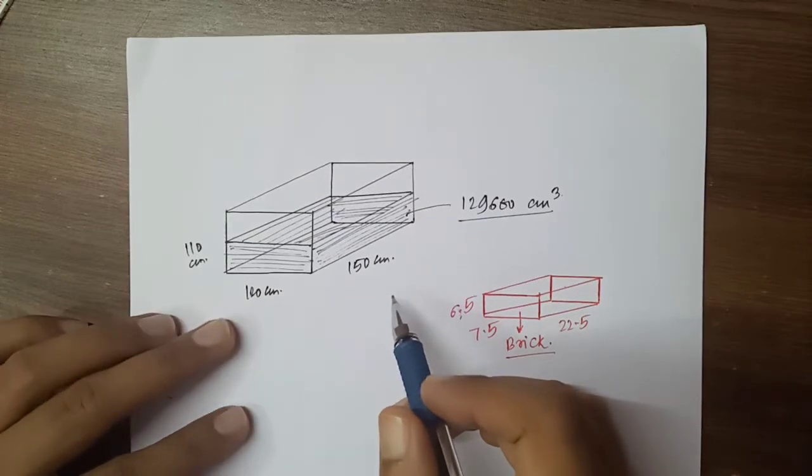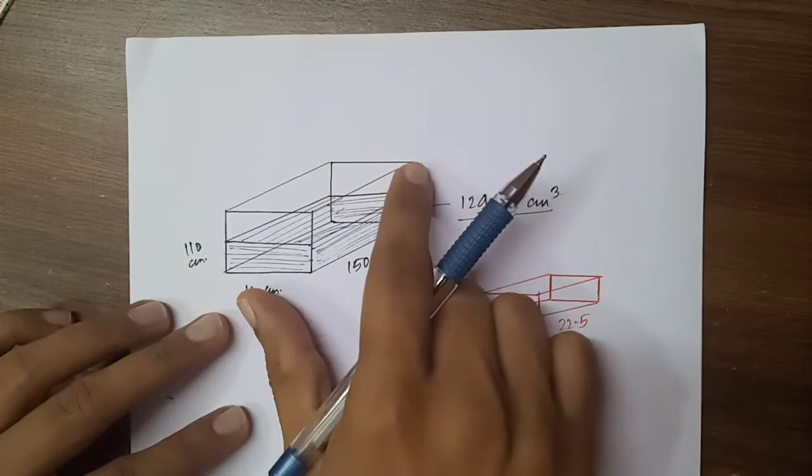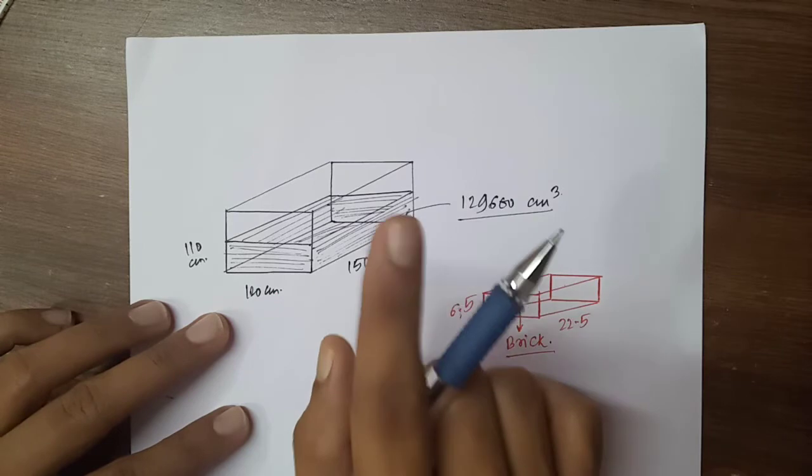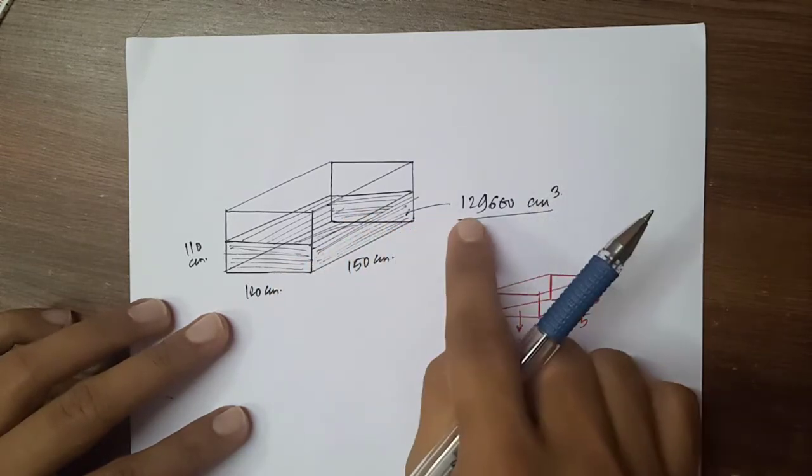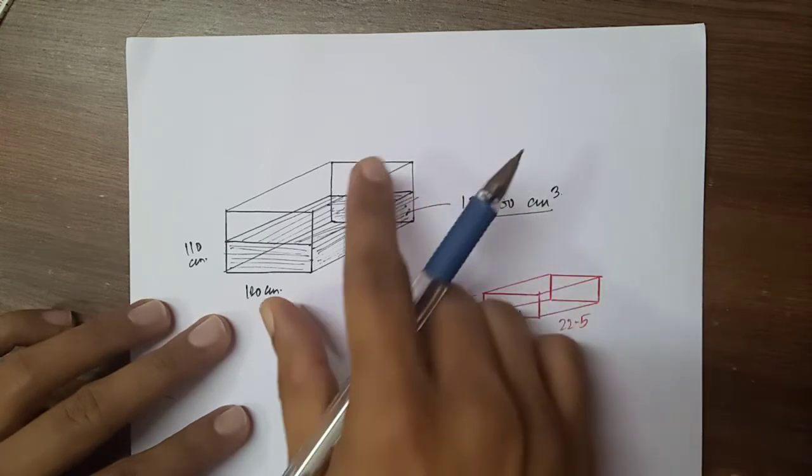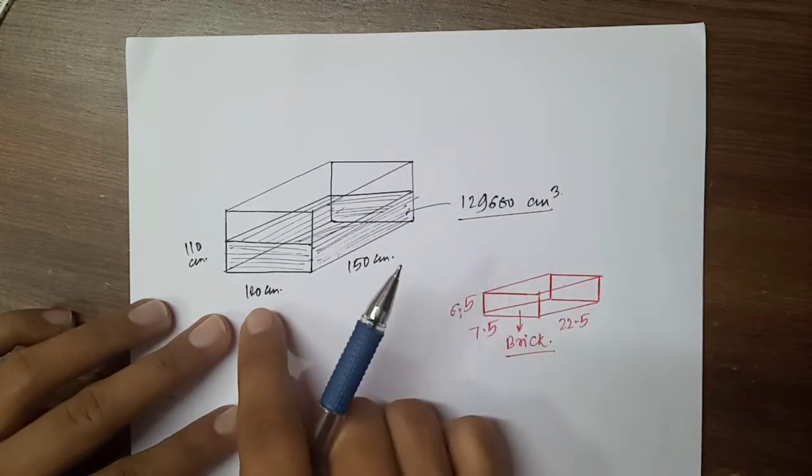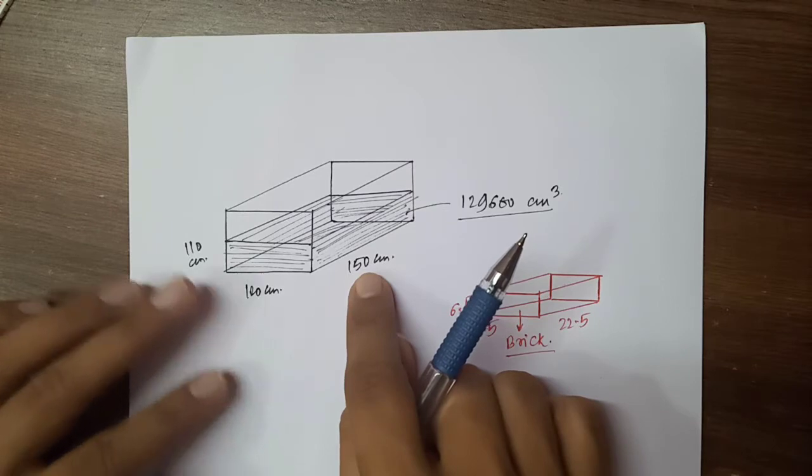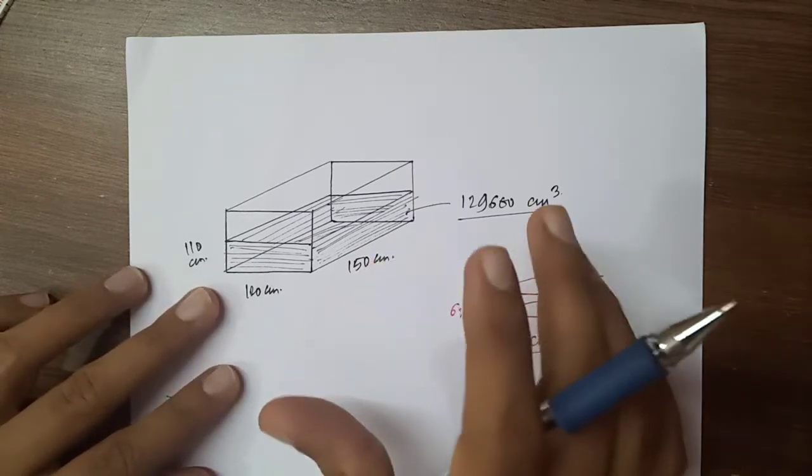So now this is the question that is given to us. We have a tank in which the water is filled. The volume of water is 129600 cm³. This tank's dimensions are 120 by 150 by 110 cm. Length, breadth, height.